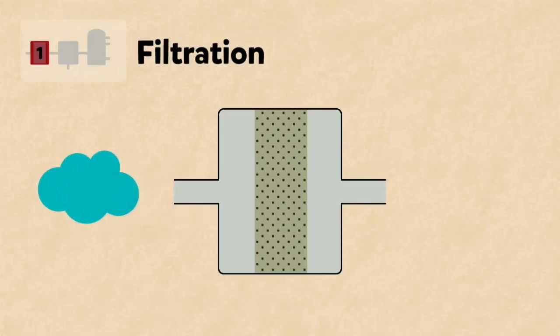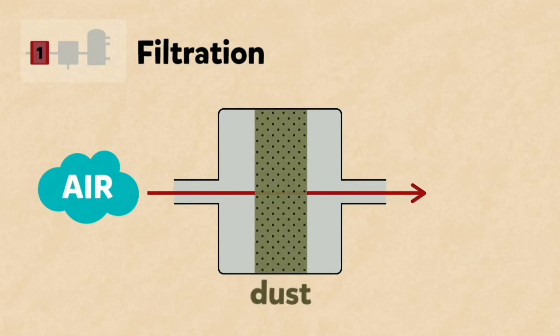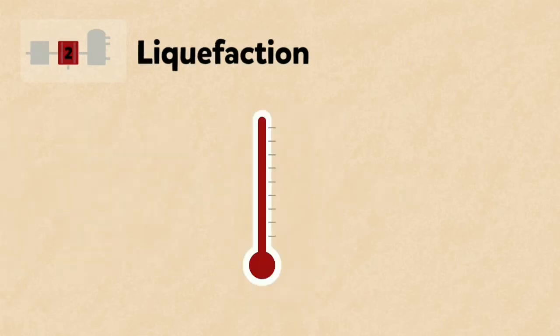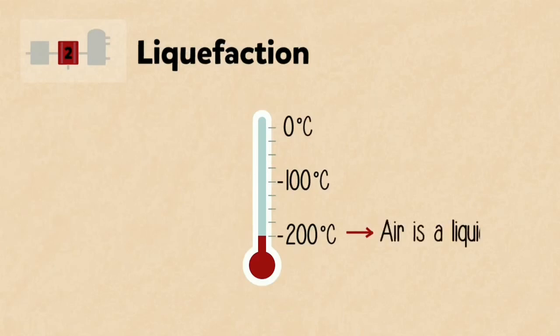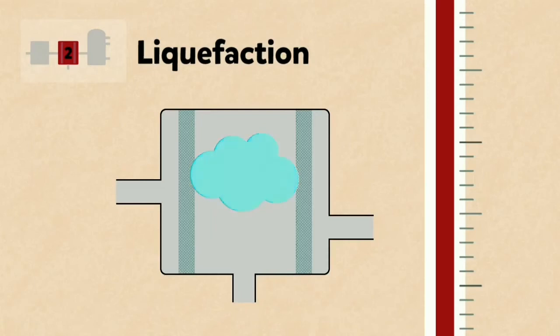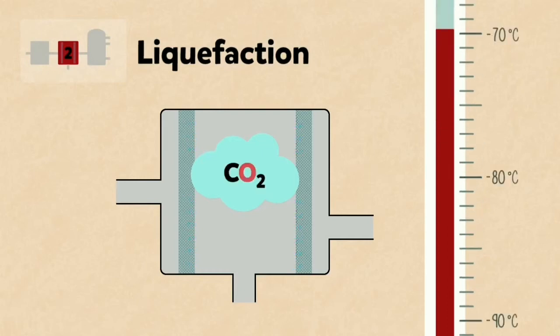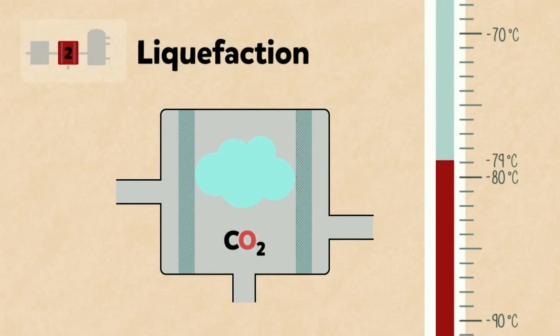Firstly, the air is filtered to remove dust. It is then cooled in stages to minus 200 degrees Celsius, at which temperature air is a liquid. As it is cooled, water vapor condenses and is removed by absorbent filters. Carbon dioxide is then removed at minus 79 degrees Celsius when it freezes.